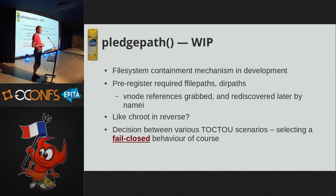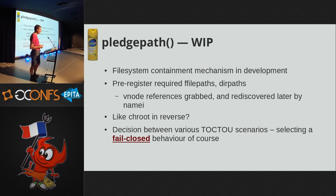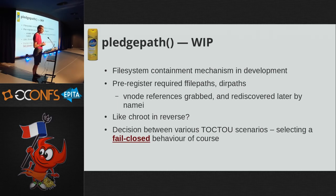I'm also working with two other developers on a file system containment model called Pledge Path. It's a registration mechanism where you register files or directories you're interested in — the V-node is grabbed and held — and later when you do standard open or stat calls as permitted by your pledge promises, it discovers the V-node was one you registered and turns it into a file descriptor or allows safe directory traversal. It has no time-of-check versus time-of-use risks, so it fits the fail-closed metaphor. The diff is under 300 lines, which is usually a sign something's done right.